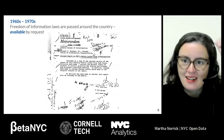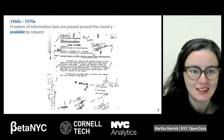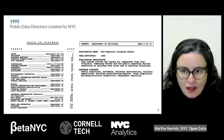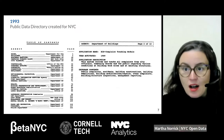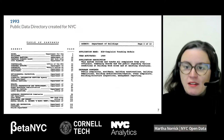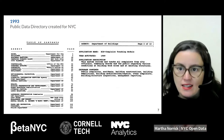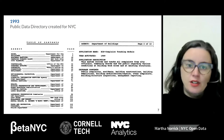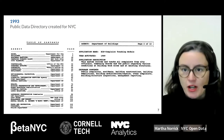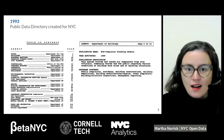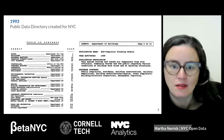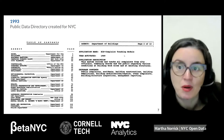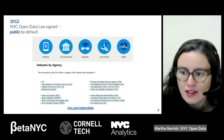In 1993, New York City released its very first public data directory, which made available a listing of the data sources that city agencies had available. So instead of a FOIL request where people had to know specifically what they were asking for, this was a directory of the systems the city was using to track information — for example, the Department of Buildings has a system called BIS (Building Information System) which still exists today. The public data directory also established a public liaison for each agency, and we'll talk about how that's evolved now that we're in the age of open data.